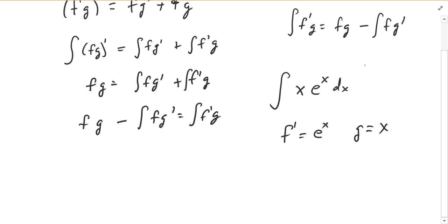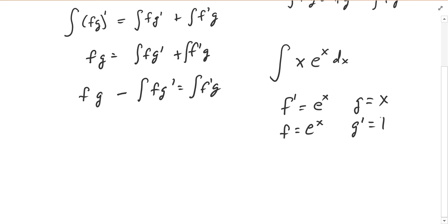I'm going to say f prime is e to the x and g is the x part. What I want to find on the other side is f, so the antiderivative of e to the x, which is e to the x. Then I need g prime: the derivative of x is just 1. That's kind of why I chose it — you want the piece you're taking the derivative of to get simpler. So g equals x and g prime equals 1.